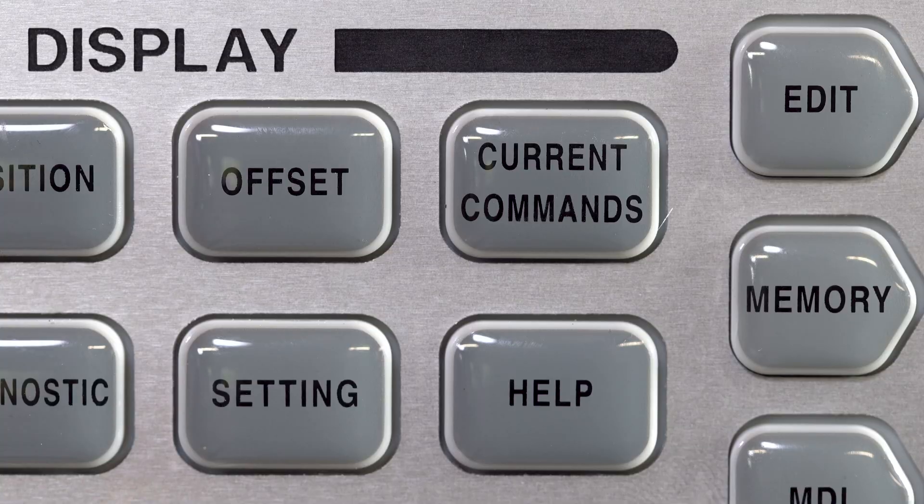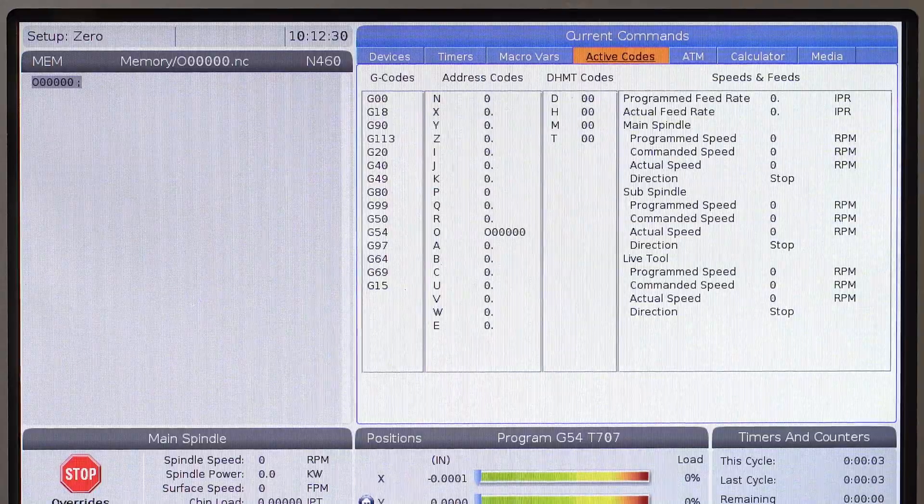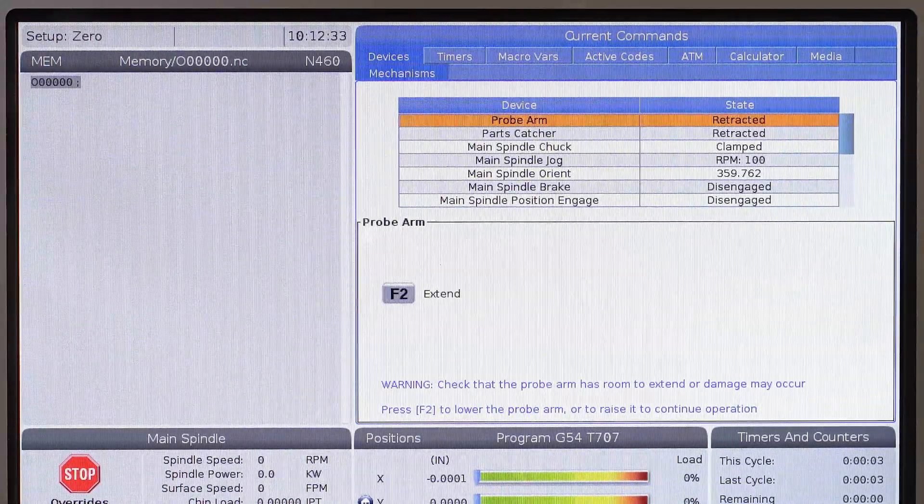Close the door and press current command. Select devices, then mechanism, and scroll down to parts catcher.